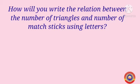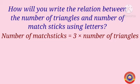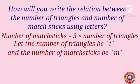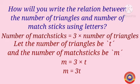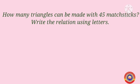Now, how will you write the relation between the number of triangles and number of matchsticks using letters? The number of matchsticks is 3 times the number of triangles. We can write it as: let the number of triangles be t and the number of matchsticks be m. So m = 3 × t. When we use letters instead of numbers, we don't usually write the multiplication sign — we can simply write m = 3t.